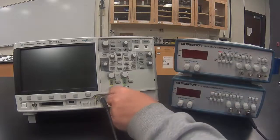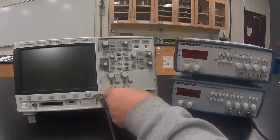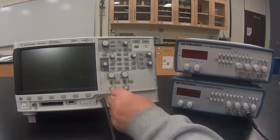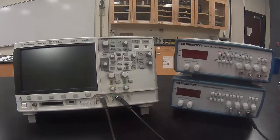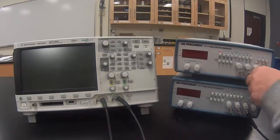Connect the other cable to channel 2. Connect its other end to the output of the other function generator.